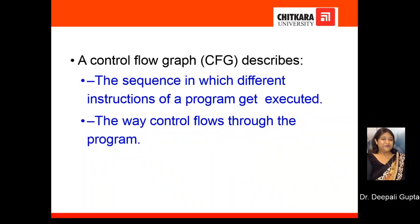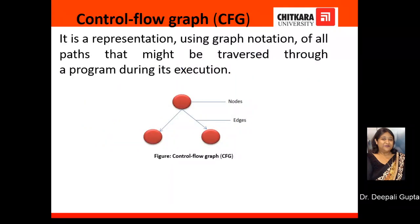This complexity matrix can be computed with the help of a control flow graph. The most basic question here is: what exactly is a control flow graph and what does it indicate? A control flow graph indicates how the control flows through the program, which in turn is a sequence in which different instructions of a program get executed when test cases are executed. A control flow graph is a representation which makes use of graphical notation to represent all the paths that might be traversed through a program during its execution. Look at the figure shown here — it is a control flow graph where red circles represent nodes and directed arrows represent edges.